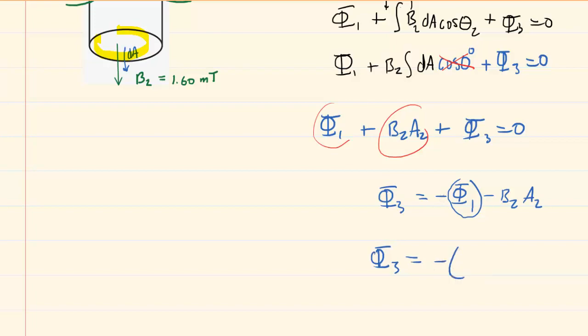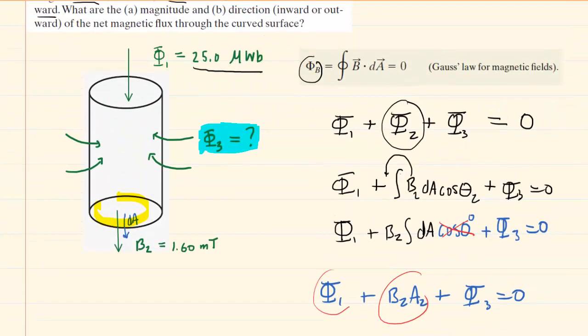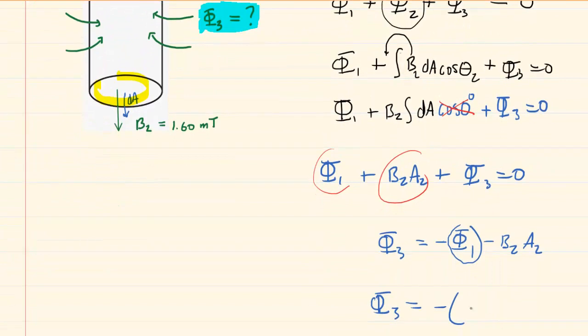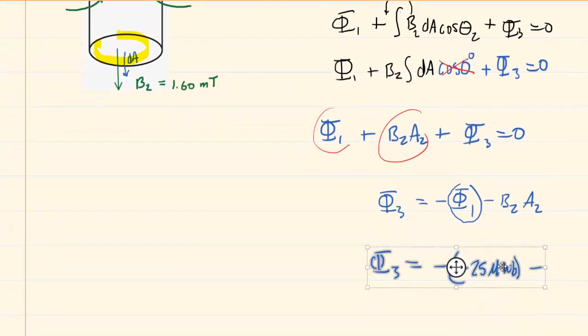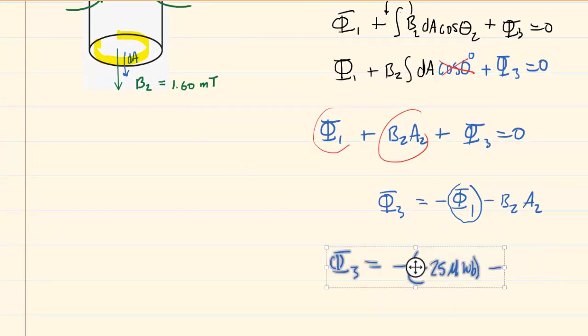So we have negative, and then we'll plug in the negative value, which was 25 microwebers. So again, negative 25 microwebers. And then we're going to subtract B2, and that's simply the magnetic field that was given to us at that lower surface. It's in millitesla. So we're going to actually have to pay attention to the units here and do some conversions in just a moment.